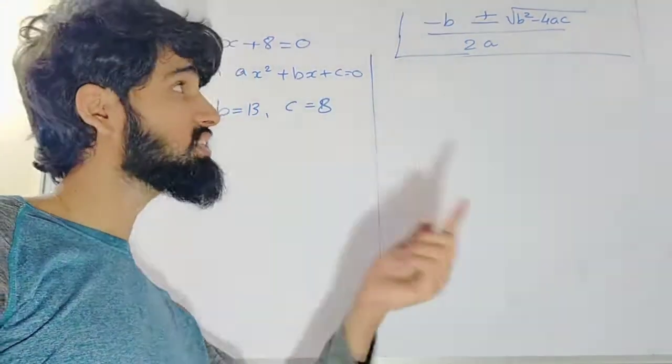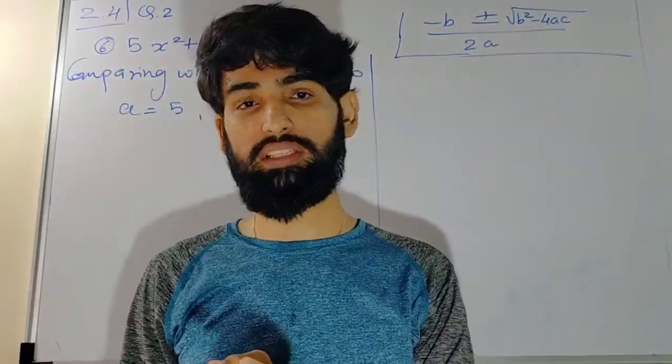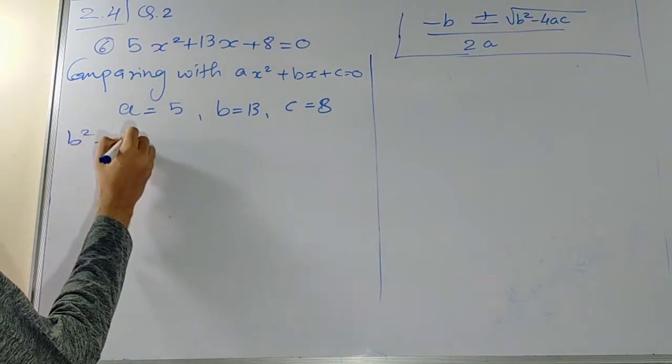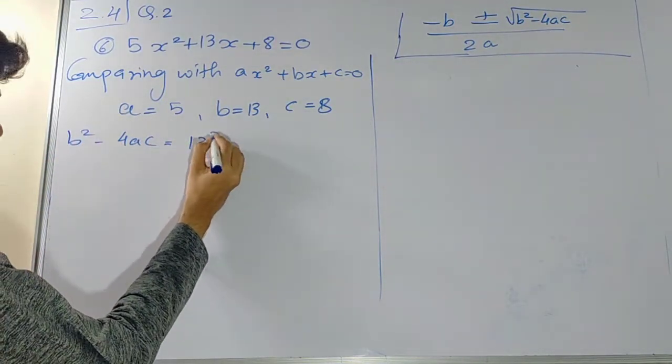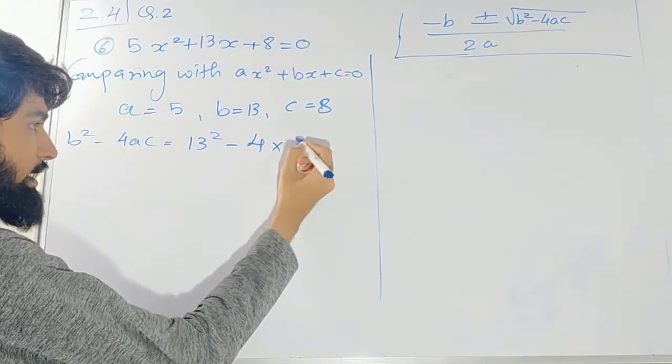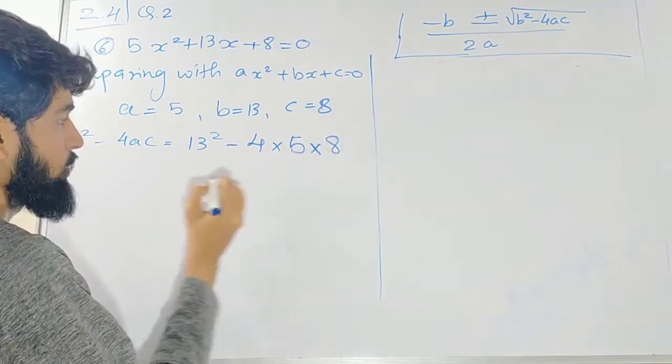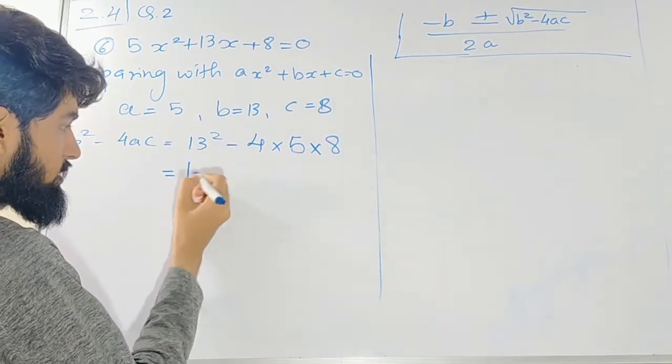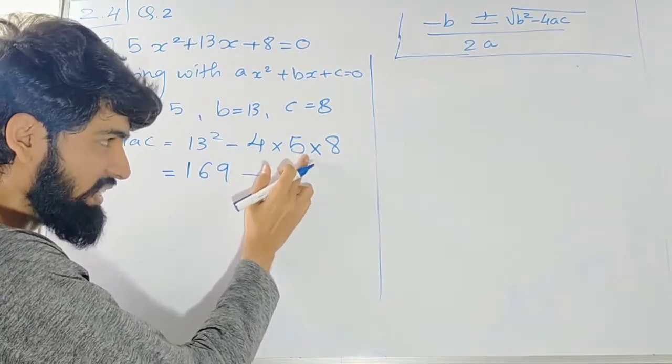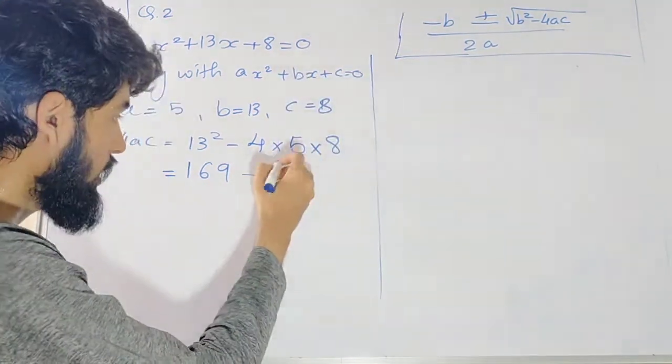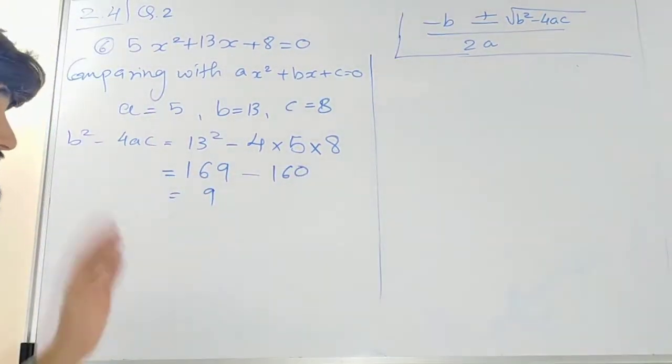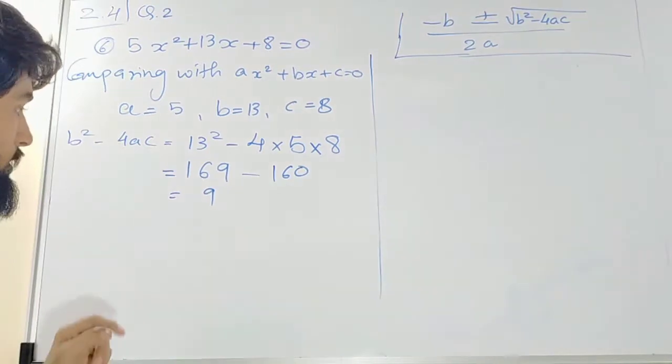Now what are we going to do? b² minus 4ac. Let's find out. So it is b² minus 4ac. b² means 13 square, then minus 4. On the place of a, I will write 5, and where c is 8. What is 13 square? It is 169. Minus sign, 4 times 5 is 20, times 8 is 160. That is 9. 169 minus 160, so we have got discriminant.